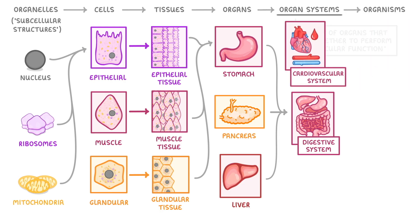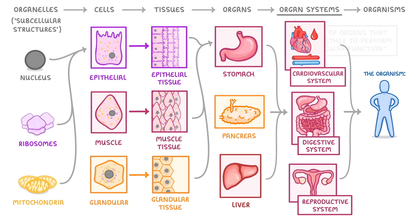Other organ systems include the cardiovascular system and the reproductive system. Finally, you could think of the whole organism as being the highest level, with multiple organ systems working together to form the organism.